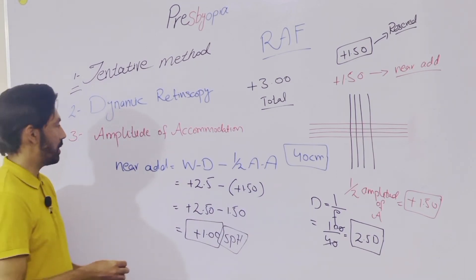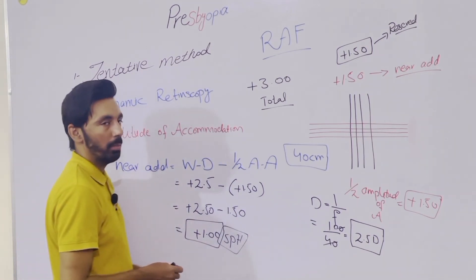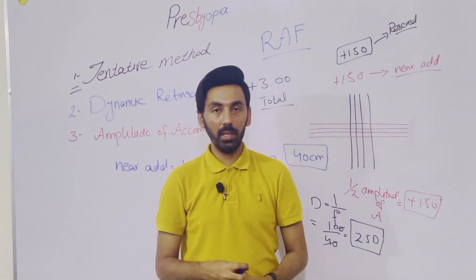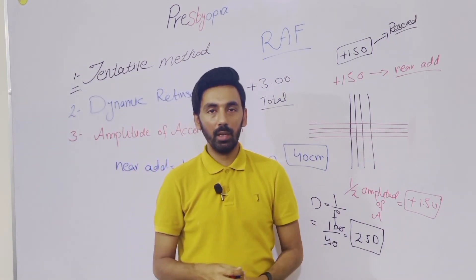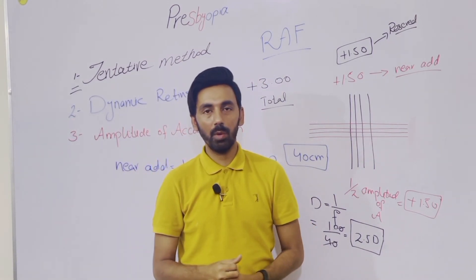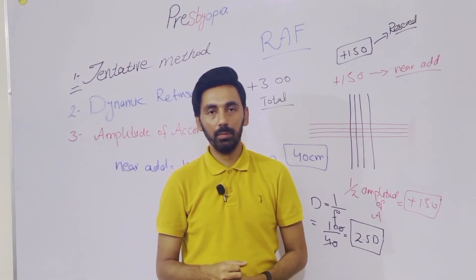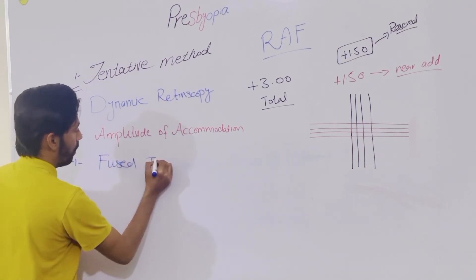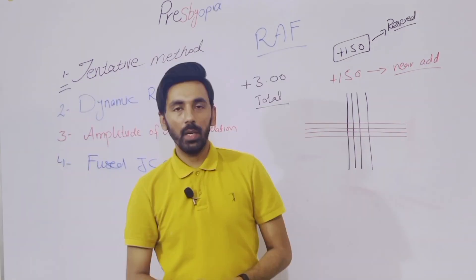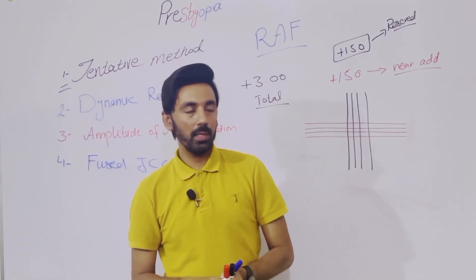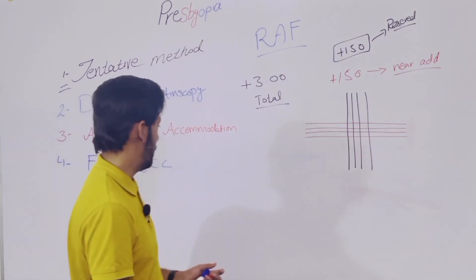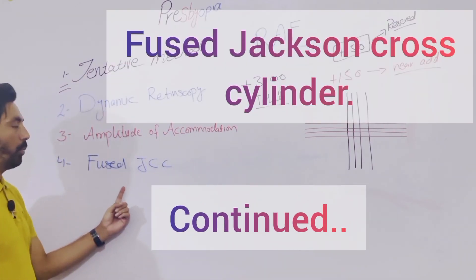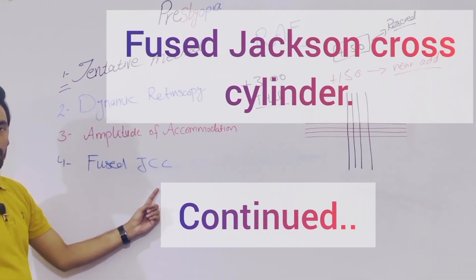Now we will discuss the fourth part — the fourth method for the near add or for the presbyopic correction — which is the Fused Cross Cylinder method.